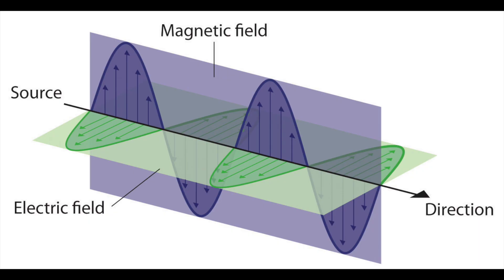Light is electromagnetic radiation, which is a type of energy that is composed of oscillating electric and magnetic fields. In a vacuum, these waves are moving at a constant speed of 3.00 x 10⁸ meters per second. Some of you may be familiar with the delay between when you can see and hear a lightning strike — this is due to the fact that light travels nearly a million times faster than sound, so the flash of the lightning reaches your eyes before the sound does.